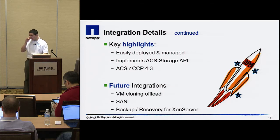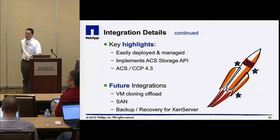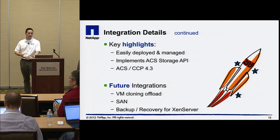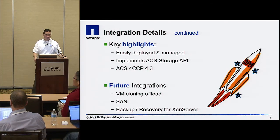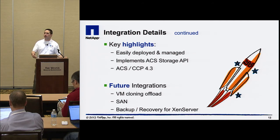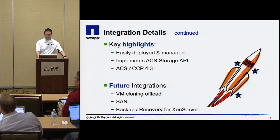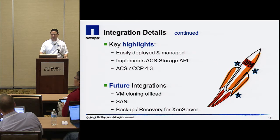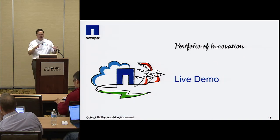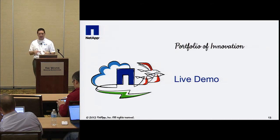In terms of what's coming in the future, Cluster Data ONTAP has support for a multitude of protocols, so having iSCSI or Fibre Channel is something we can work on in the future. Cloning of virtual machines — relying on FlexClone technology for super-fast block-level copies of VMs — is also on the roadmap. Our backup and recovery strategy for VMware already uses that same technology. Backup and recovery for XenServer is a feature that's lacking but we want to add.